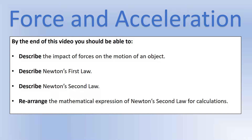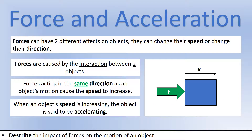Let's start with how forces affect motion. Forces can do two different things to an object: they can change the speed, or they can change the object's direction, and sometimes they'll change both at the same time. A force comes about due to an interaction between two objects — it might be contact, gravitational force, or electric force — but we need two objects to have a force.